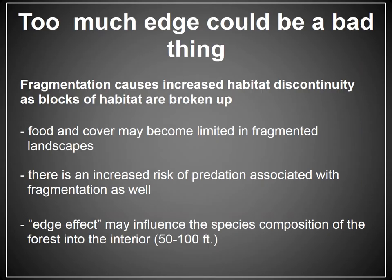But too much edge can be a bad thing. Fragmentation and habitat discontinuity can be bad things. At some point, you're only left with habitat to support edge species, and the whole suite of other species that rely on larger blocks of intact habitat — whether that's large blocks of early succession habitat or large blocks of late succession habitat — all those species are lost.